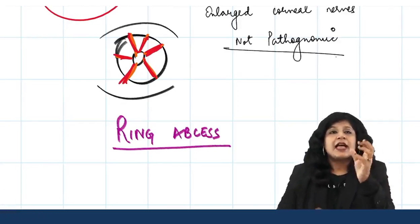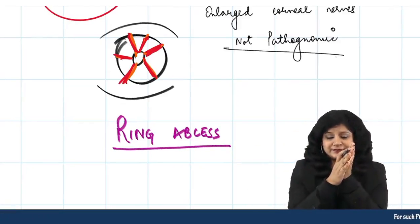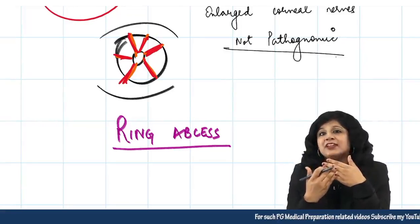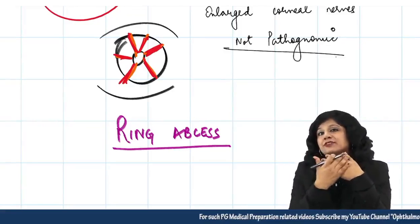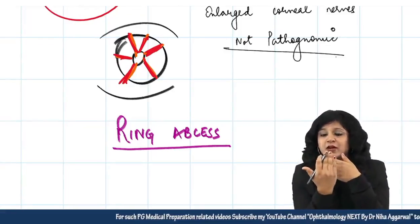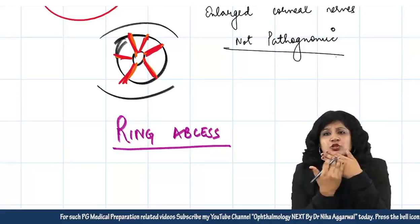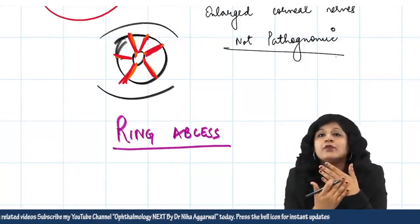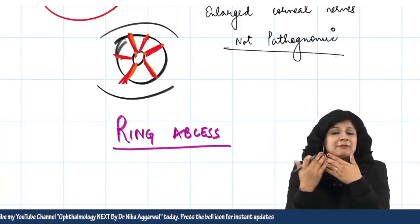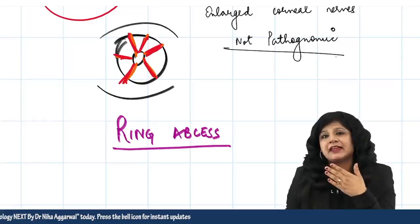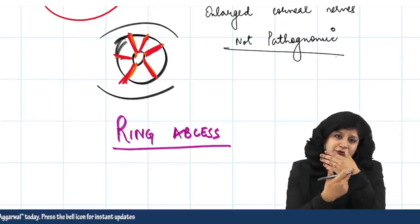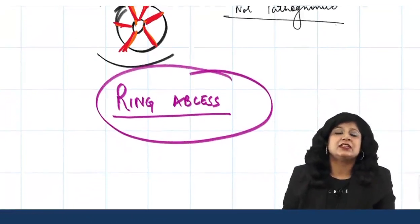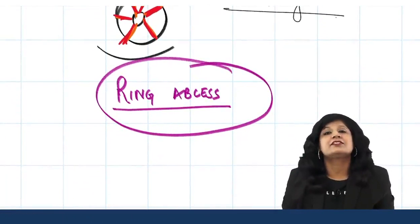In Acanthamoeba keratitis, the amoeba remains on the surface of the cornea — between the contact lens and the cornea — spreading its pathology across the entire corneal surface. This causes widespread radial keratoneuritis, and ultimately the whole cornea develops a ring-shaped abscess. The typical ring infiltrate is therefore very characteristic of Acanthamoeba keratitis.